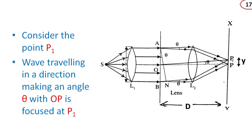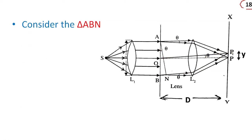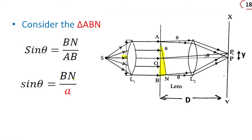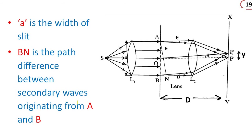Now consider the point P1. P1 is a point to the right. The angle OP makes with the direction to P1 is theta. Light traveling in a direction making an angle theta with OP is focused at point P1. Considering the triangle, sin theta equals BN divided by AB. Since AB equals small a, we get BN equals a sin theta, where a is the width of the slit.